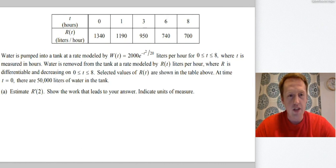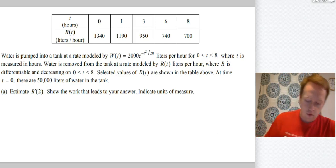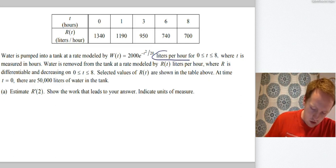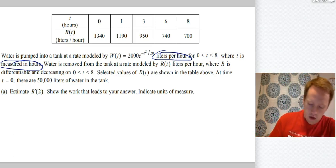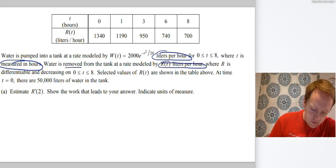All right, so water is pumped into a tank at a rate modeled by W of T equals 2,000 E to the negative T squared over 20 liters per hour, where T is measured in hours. So those are important things to note. We've got some units, liters per hour. T is measured in hours. Water is removed from the tank at a rate modeled by R of T liters per hour.